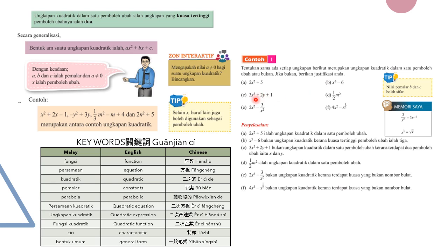For part C, 3x² + 2y + 1 has two variables, x and y, so it is not a quadratic expression. Part D, ½m², even though b and c are both equal to zero, has only one variable m with highest power 2, so it is a quadratic expression. Part E is not quadratic because the second term is negative 3 over x², meaning the power is negative 2, which is not a whole number.